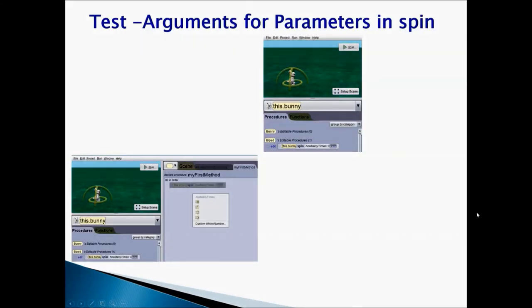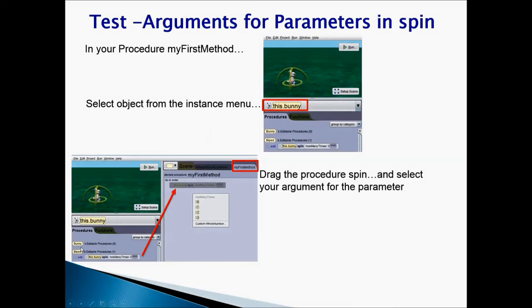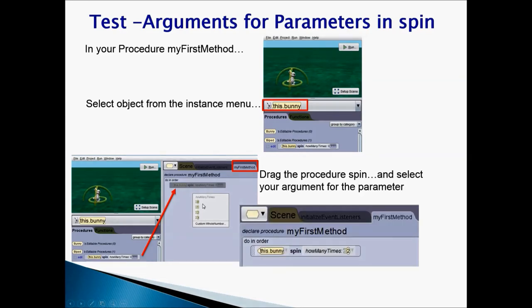Test arguments for parameters in spin procedure. So we have a spin procedure. We created parameters in that. We used the parameters in our instruction. Now we have to test to see by supplying the values. So the first thing you want to do is you want to go to your procedure, my first method. And then you would select your object from the instance menu. My object is bunny and I would select bunny. And I would see my procedure spin and I would drag that and drop it into my first method. So when I drag the procedure spin, it will ask me to select an argument for the parameter how many times I created. Once I select the argument, my instruction would look something like this. This bunny spin how many times equals to 2. Now how many times is our parameter and 2 is our argument.